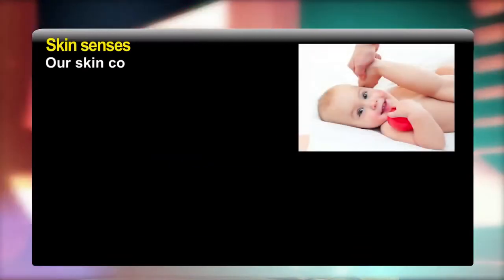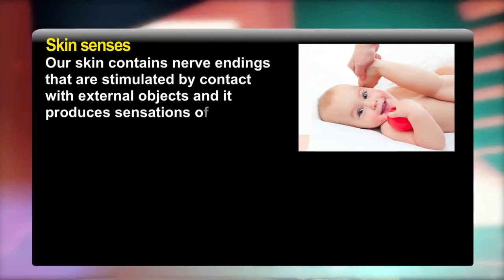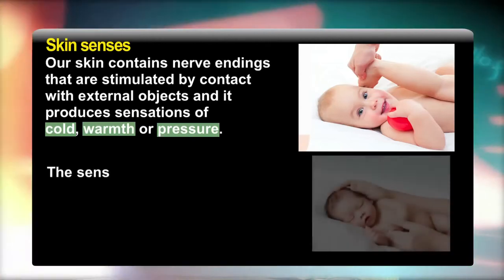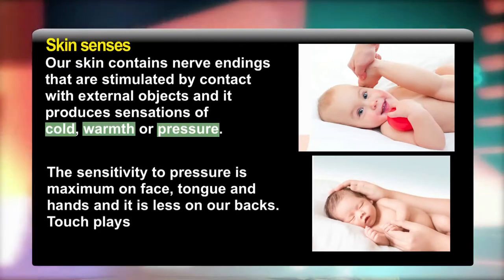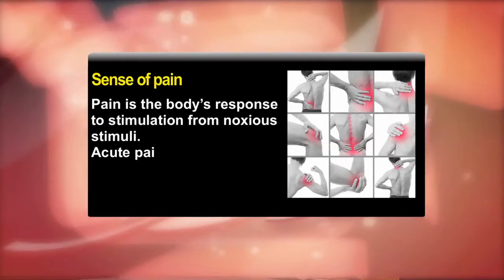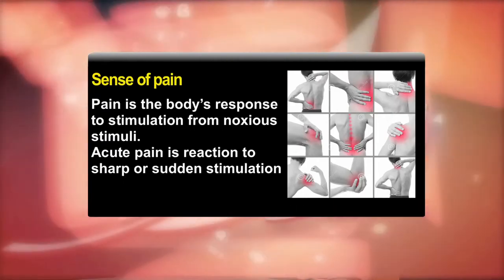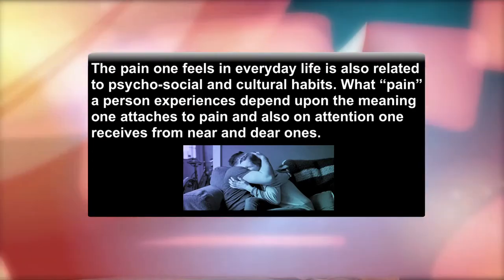Our skin contains nerve endings that are stimulated by contact with external objects, producing sensations of cold, warmth, or pressure. Sensitivity to pressure is maximum on the face, tongue, and hands, and less on our backs. Touch plays an important role in human relations and emotions. Pain is the body's response to noxious stimuli. Acute pain is a reaction to sharp or sudden stimulation, and the pain one feels in everyday life is also related to psychosocial and cultural factors, including the meaning one attaches to pain and the attention one receives from near and dear ones.